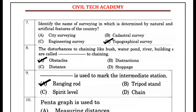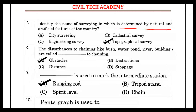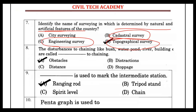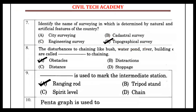The name of surveying in which natural and artificial features of a country are determined is topographical surveying. The survey used to fix building lines and boundaries is cadastral surveying. Engineering surveying covers railway, highway, and waterway projects.